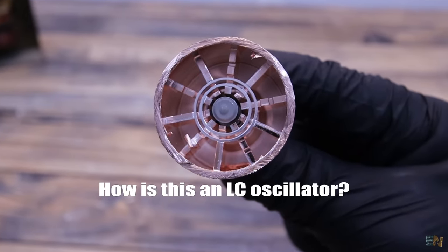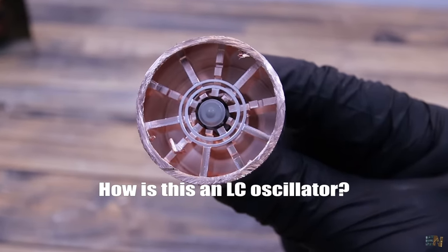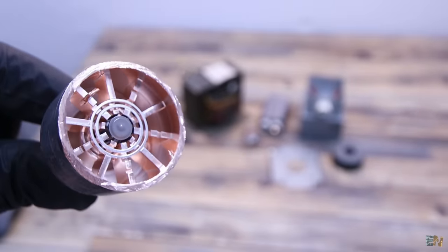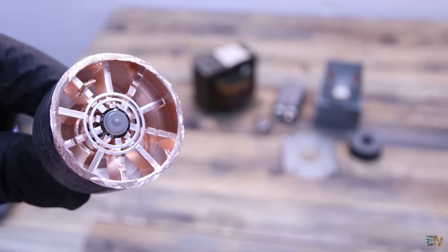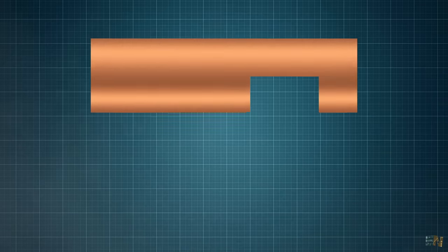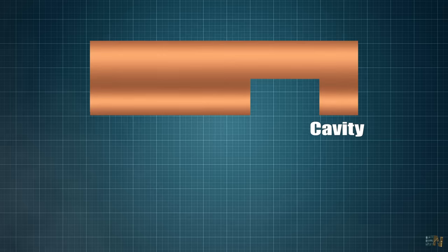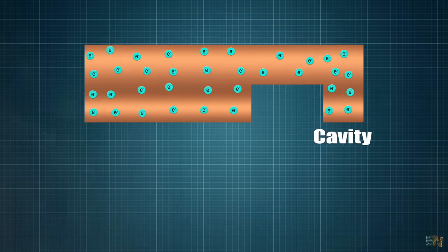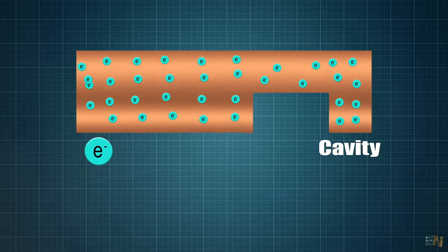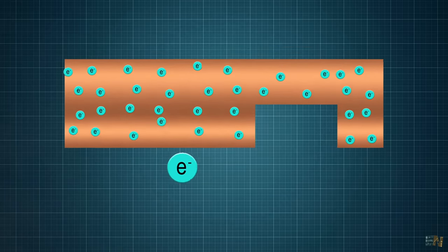So how could this act as an LC tank? Because where is the coil and where is the capacitor? Well, for that, let's see this example. Let's assume a copper bar with a cavity. When an electron is passing on the side of it, it will repel all the other electrons inside of the copper bar, right? Near the cavity, the electrons will have no space above them, so they will jump to the other side.